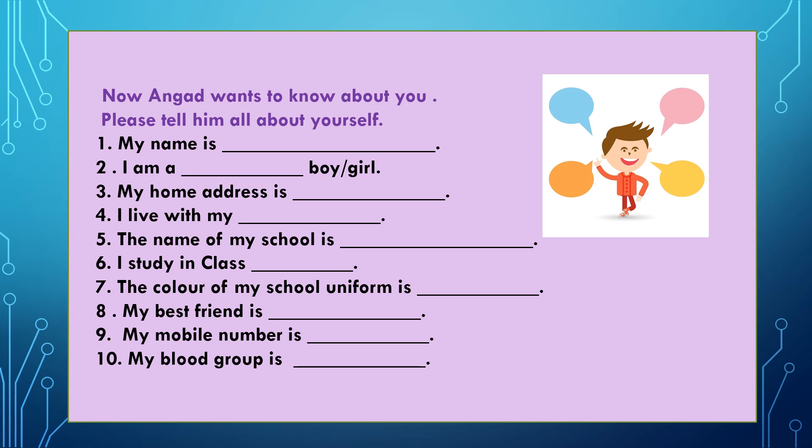Children, now Angad wants to know about you. Please tell him all about yourself. In number one you will write down your name. In number two you will write down whether you are a girl or a boy. Then your home address, the name of your school, your class, the color of your school uniform, and the name of your best friend.